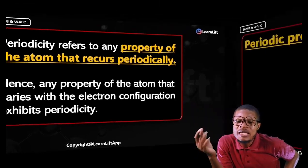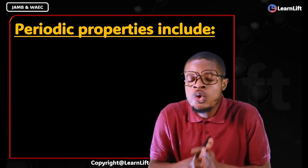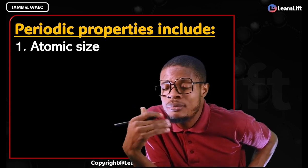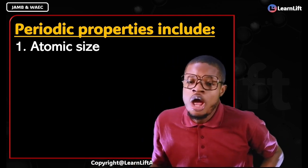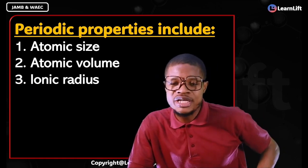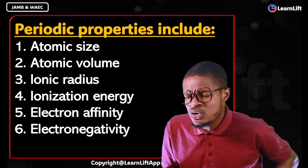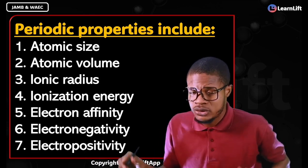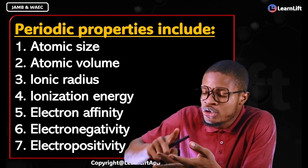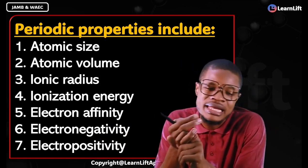Within the periodic table there are what we call periodic properties — the things that show periodicity. They include: number one, atomic size; number two, atomic volume; number three, ionic radius; number four, ionization energy; number five, electron affinity; number six, electronegativity; and number seven, electropositivity. We are going to look at all of these one after the other.